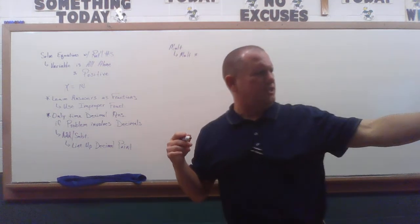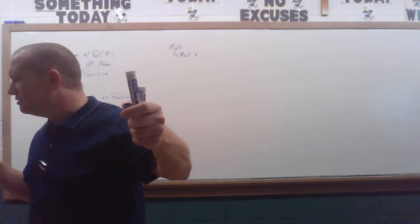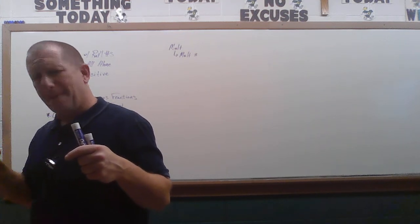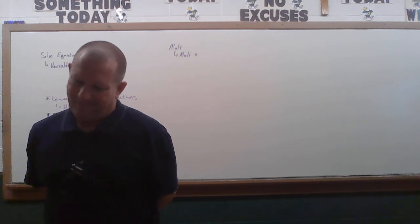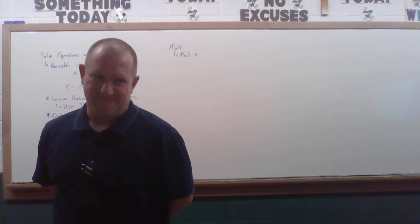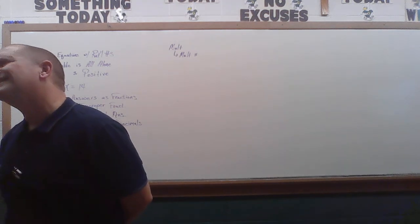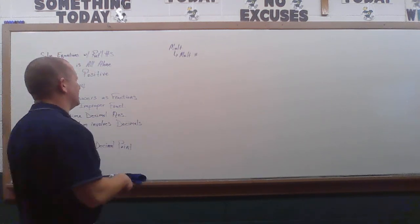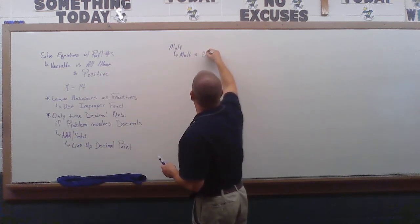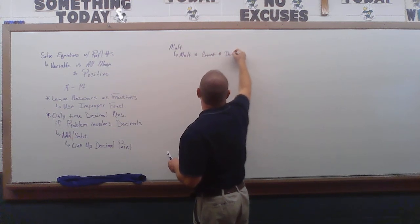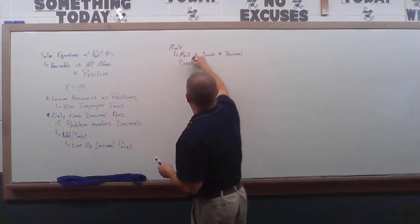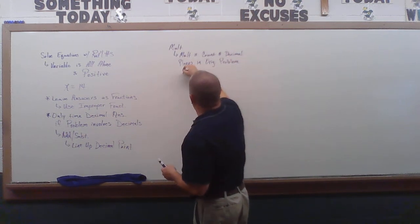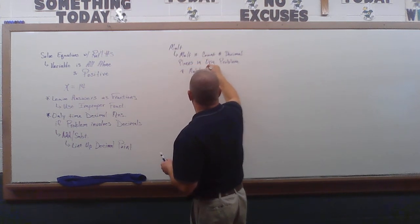When adding and subtracting decimals, I can only add and subtract the exact same decimal places. For multiplication, you multiply like you normally would, and then count the number of decimal places. You add all the numbers after the decimal point from each factor, and that's how many places you move the decimal in the answer. You're going to multiply and then count the number of decimal places in the original problem — it has to match the answer.